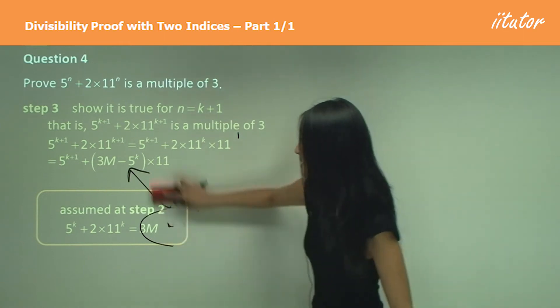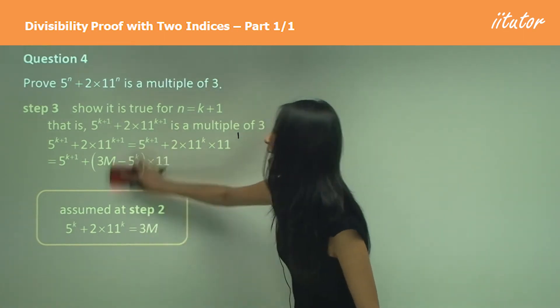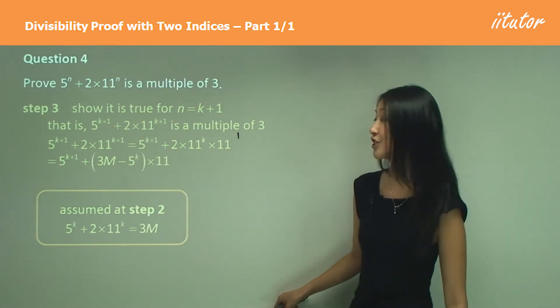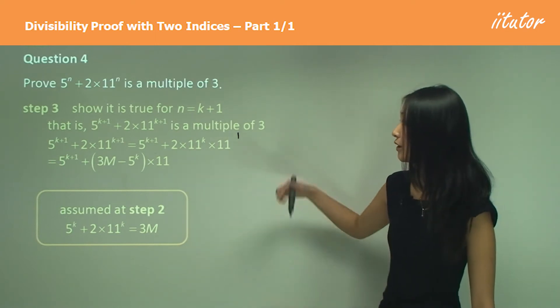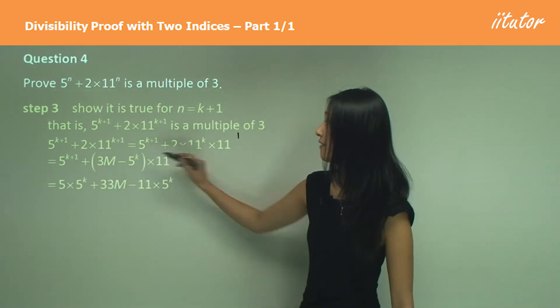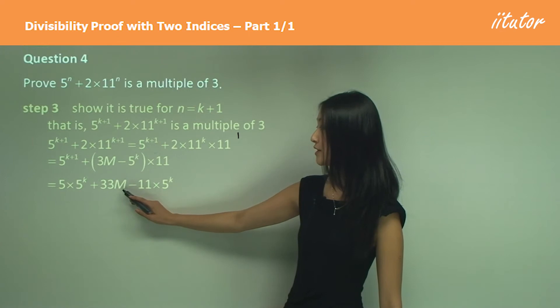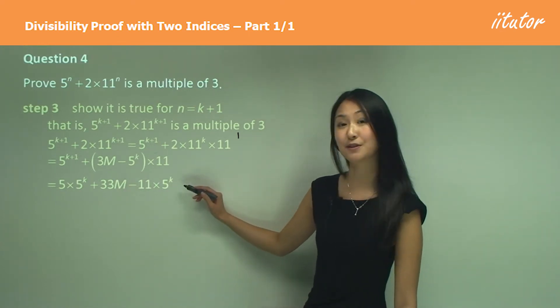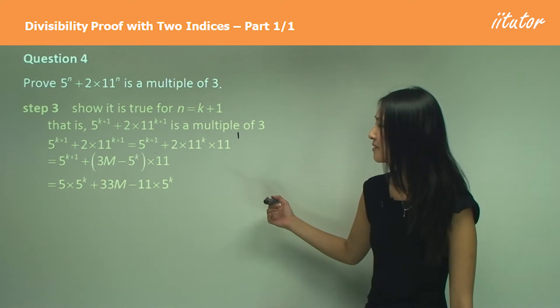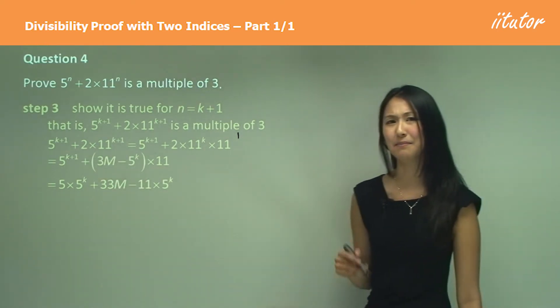Once I've used the assumption, I know that what's left over is manipulation of this algebraic equation. I've expanded that to become 33m minus 11 times 5^k.